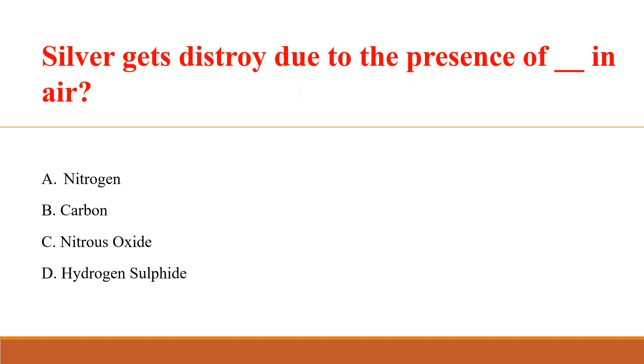Silver gets tarnished due to the presence of which substance in air? Answer: D. Hydrogen Sulphide.